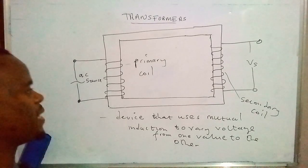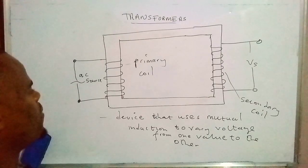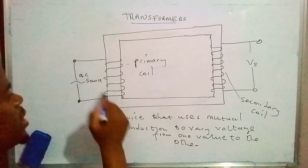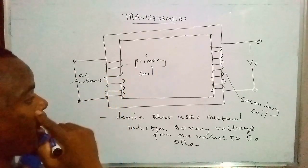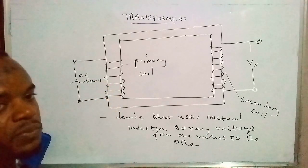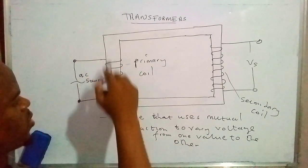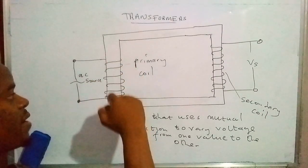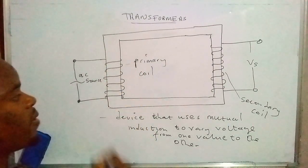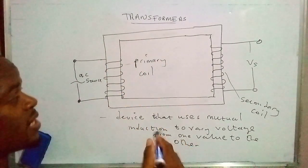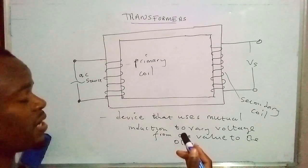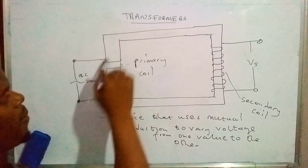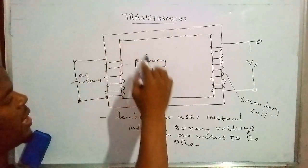Let me explain this in depth. This coil, which is called the primary coil, is actually connected to the AC source — the alternating voltage source. It is that alternating voltage source that drives the current through this primary coil. Because an alternating current keeps on changing its direction as well as its magnitude, it actually forms a magnetic field around this coil.